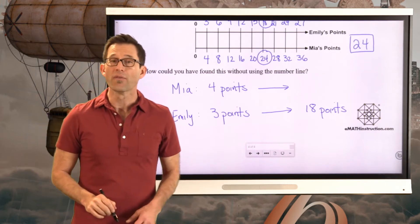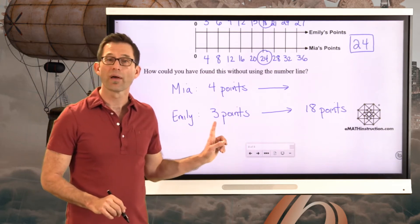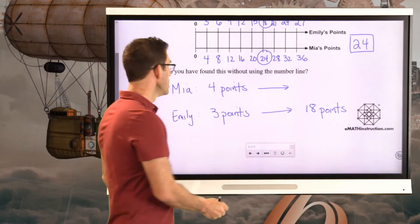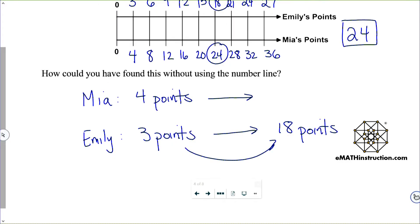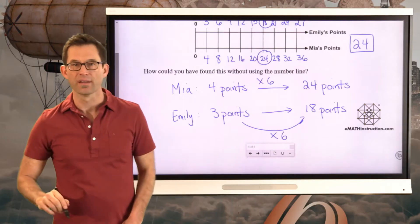So what we really need to think of is what do we need to multiply the 3 by in order to get the 18? Well, we're going to multiply that by 6. And that means we have to multiply by 6 in this case as well.